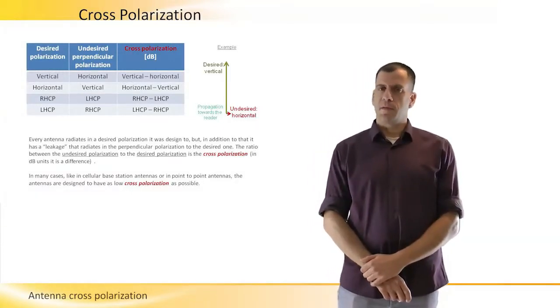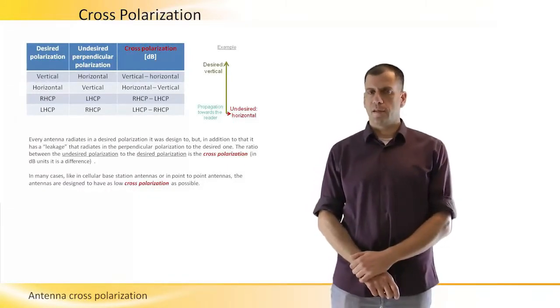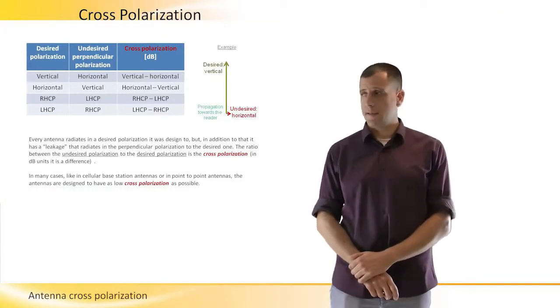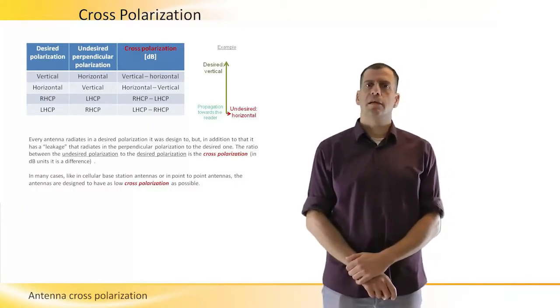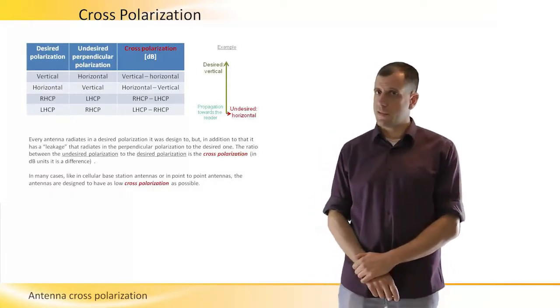Theoretically and optimally we would have wanted all the energy to be radiated away in the vertical polarization, but practically, because of the limitation of antenna design, some of the energy radiates in the perpendicular polarization to vertical, which is in this case horizontal.